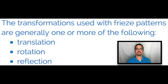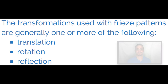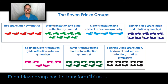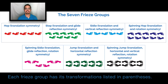The transformations used with freeze patterns are generally one or more of the following: we have translation, which is just like sliding, rotation, and reflection. These transformations can be combined to make other symmetries. Each possible combination of symmetries is called a freeze group.